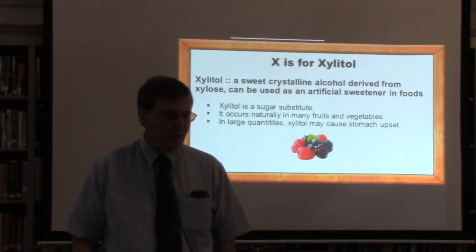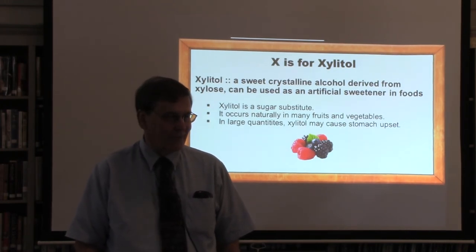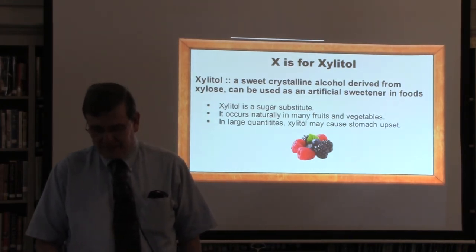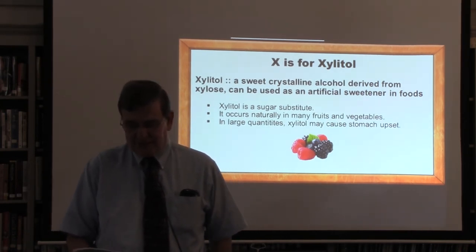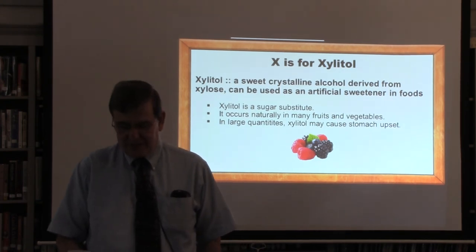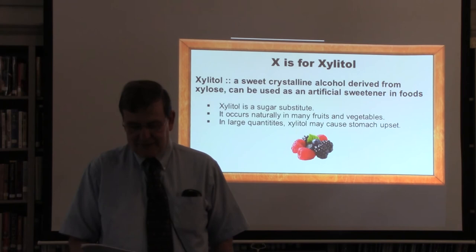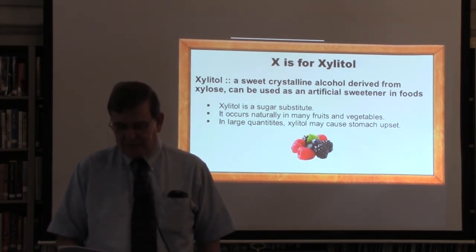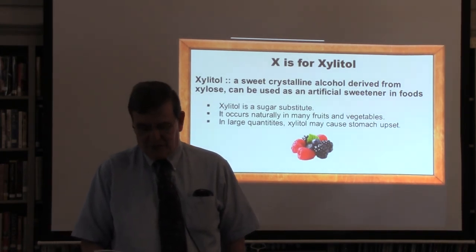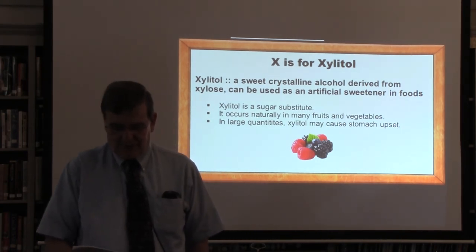X is for xylitol, which is a sugar alcohol — a non-absorbable sweetener. It's a natural sweetener found in berries, fruits, vegetables, and mushrooms. Xylitol is as sweet as regular sugar, contains less carbohydrate than table sugar, and has a glycemic index of 7. Because it's a sugar alcohol, xylitol has less effect on blood glucose than regular sugar. Xylitol is commonly used in toothpaste and chewing gum. Unfortunately, due to digestive issues, high amounts can cause cramping and diarrhea.